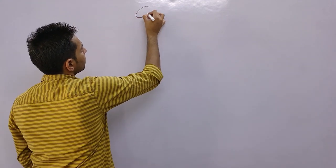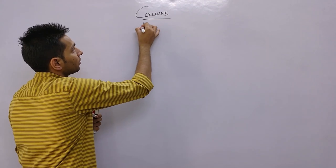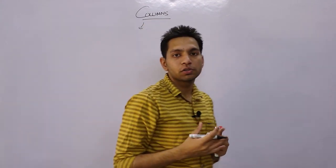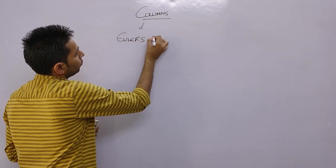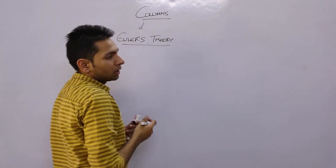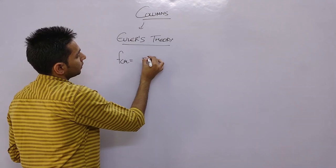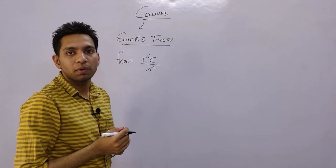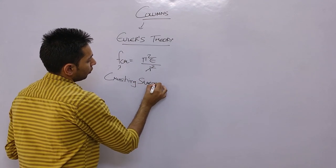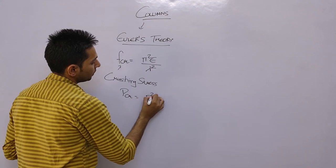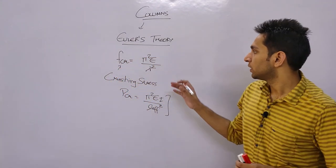Starting with today's topic - columns. You know that columns are axial load carrying members. We have two theories here: Rankine theory and Euler's theory, on the basis of which we calculate the load acting in columns. From Euler's theory, they generally ask you to find out the value of load acting in the column. The crushing stress is given as π²E / λ², and if crushing load is asked, this is multiplied by area, giving π²EI / L_effective². This is the formula for Euler's theory.